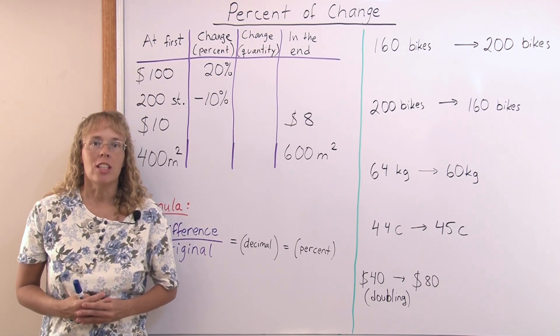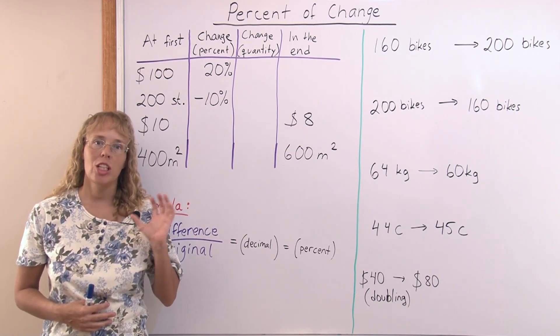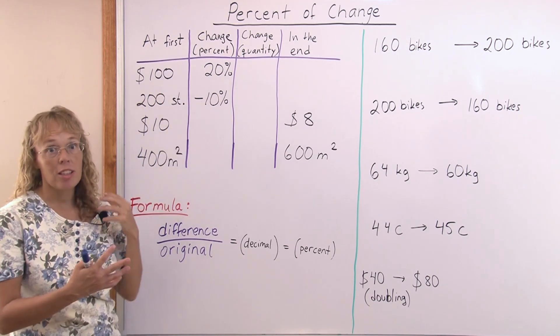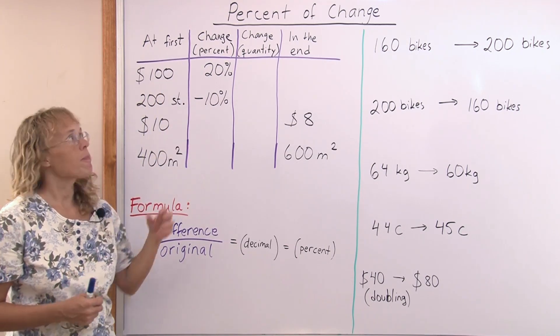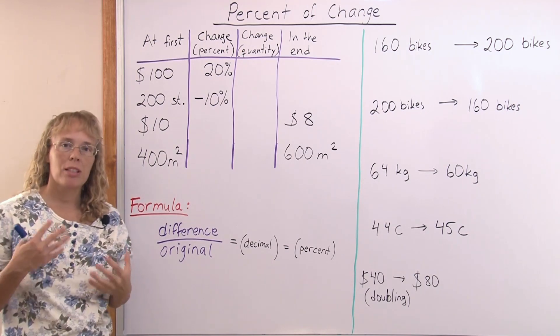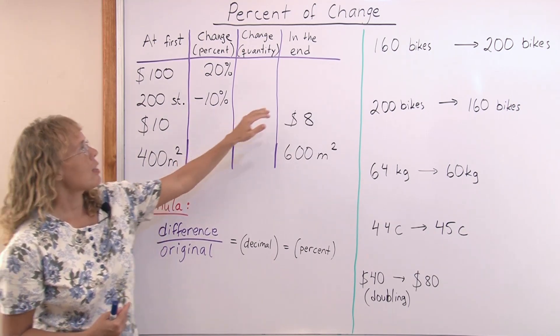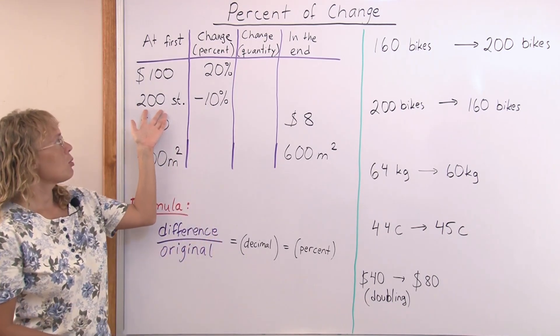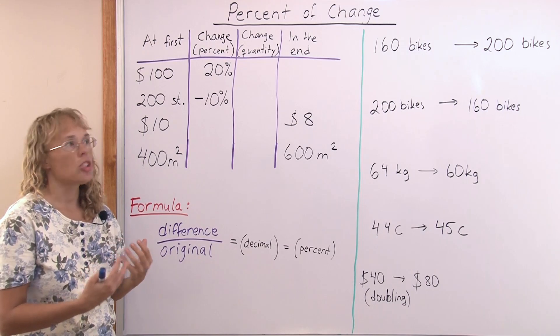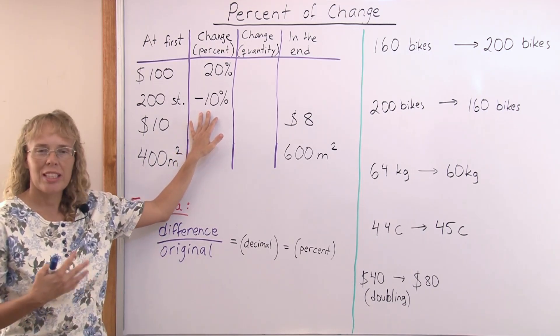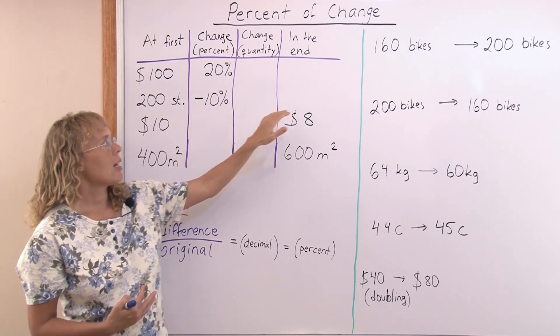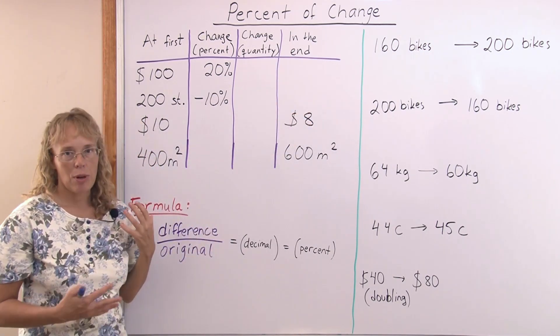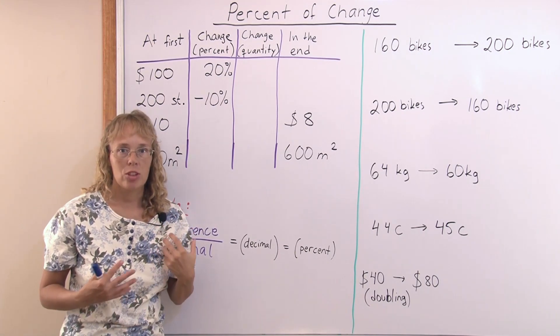In percent of change there is some quantity that changes. For example, we could have something costing $100 at first and then the price changes by 20%, and then we need to calculate what's the price in the end after the change. Or we might have 200 students and then there is a change. Maybe next year there is 10% less students and we need to calculate how many students there are in the end.